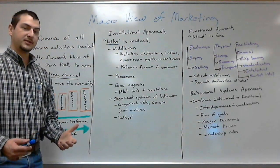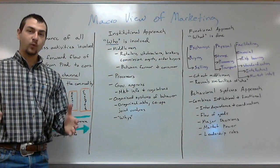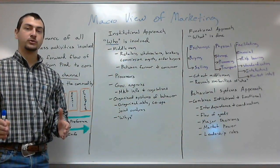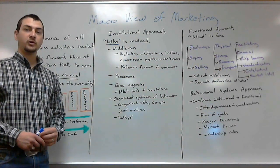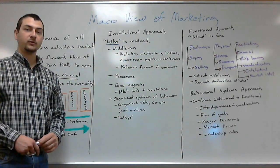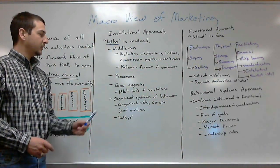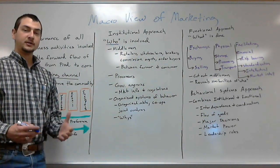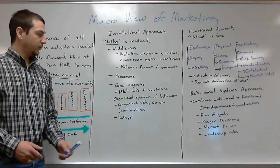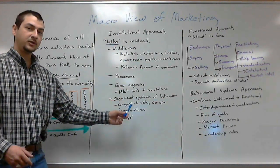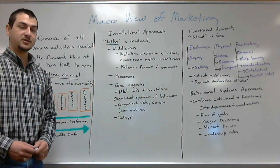We also have the processors — those involved in taking a raw agricultural good and turning it into a usable, consumable good for the final consumer. We also have governmental agencies, which often play a key role in gaining market information and developing regulations and standardization.